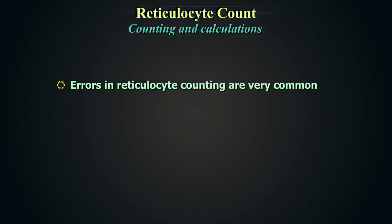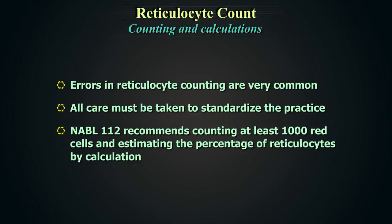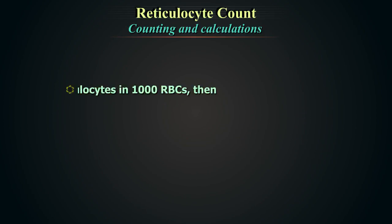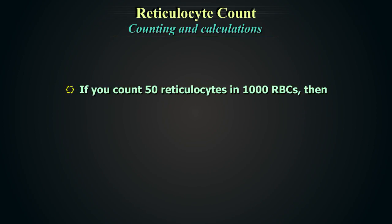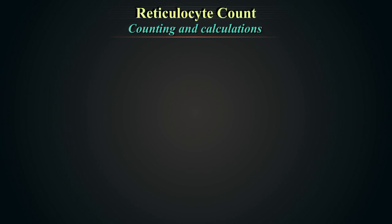Errors in reticulocyte counting are very common, and all care must be taken to standardize the practice. NABL112 recommends counting at least 1000 red cells and estimating the percentage of reticulocytes by calculation. For example, if you count 50 reticulocytes in 1000 red blood cells, the percentage will be 50/1000 × 100 = 5%.